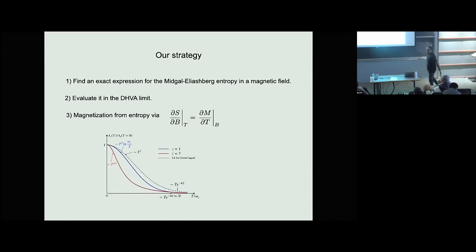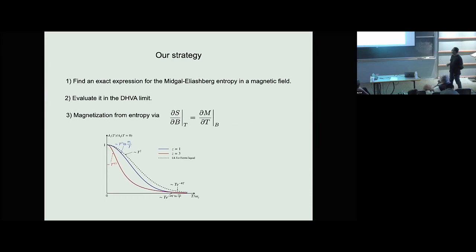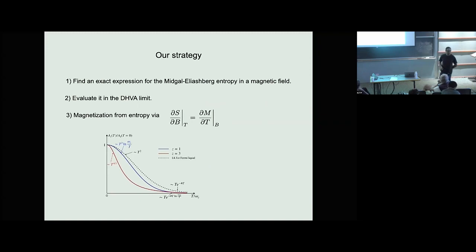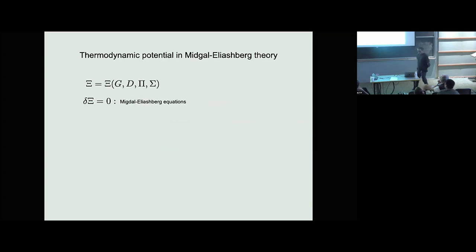The strategy we'll employ is to find an exact expression for the Migdal-Elyashberg entropy in a magnetic field, evaluate it in the dHvA limit, and then obtain the magnetization from the entropy via Maxwell relations.